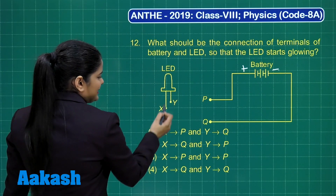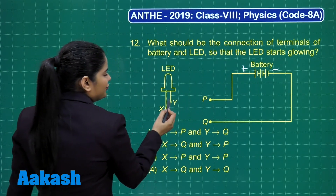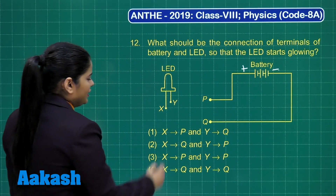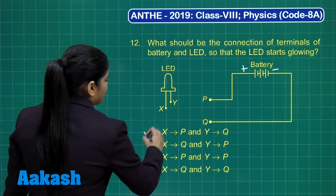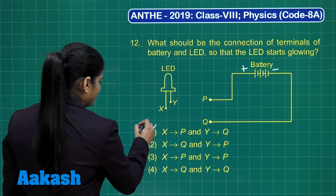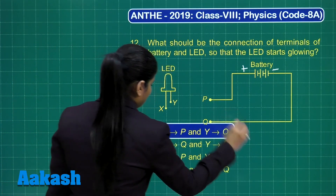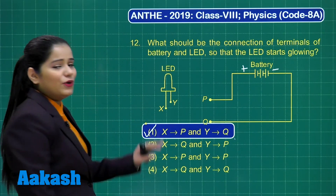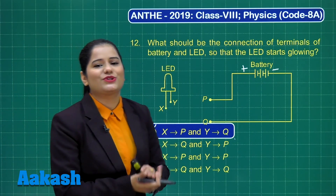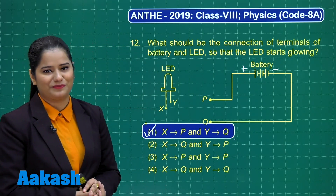So X should be connected to P and Y should be connected to Q, which means option number 1 is the correct option. I hope this is clear. Let's proceed towards the discussion for the next question.